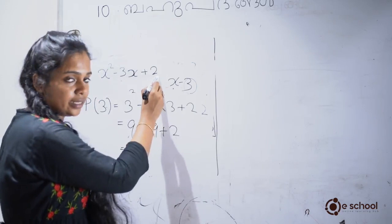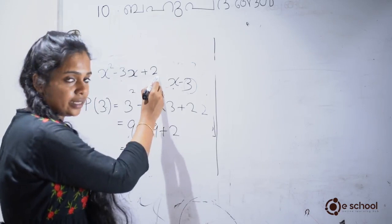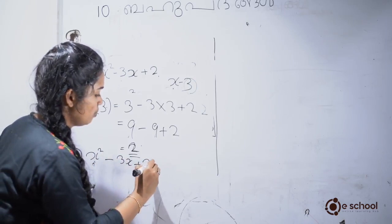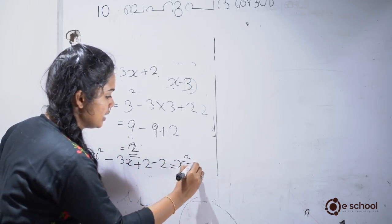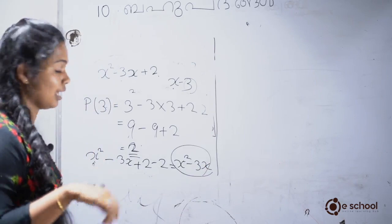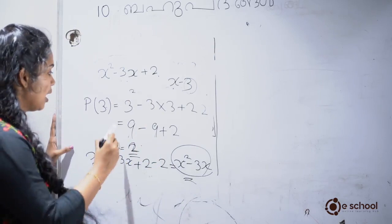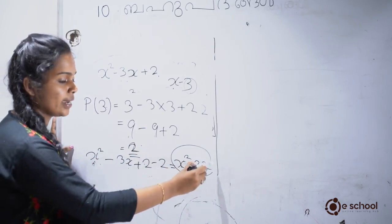Let's look at the factors. We have x squared minus 3x plus 2, then we simplify to get x squared minus 3x, and further factor to obtain x minus 3 and x minus 2 as the factors.